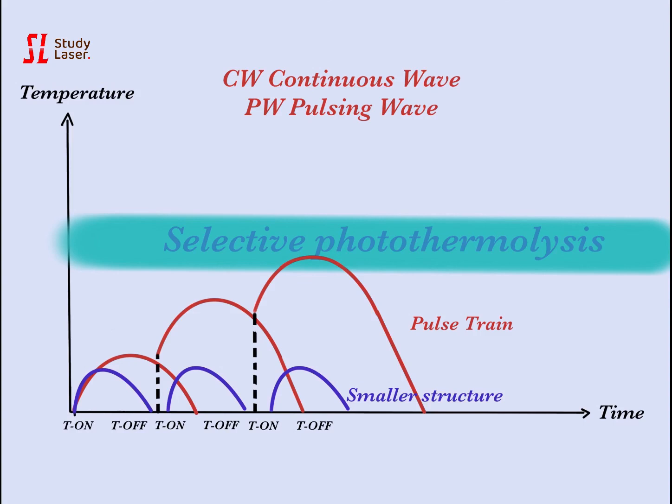For example, hair reduction with laser treatment applies this principle. Hairs, with their melanin pigment, are the larger structures targeted selectively by the laser, without burning the surrounding tissues, which are smaller cells.